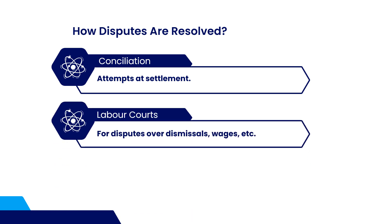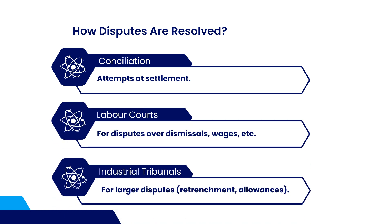How does the dispute resolution process work? It typically begins with conciliation, where parties are encouraged to reach a settlement. If this fails, the dispute is referred to labour courts or industrial tribunals depending on the complexity of the issue. The goal of the act is to resolve issues without causing unnecessary disruption to business or the livelihood of workers.